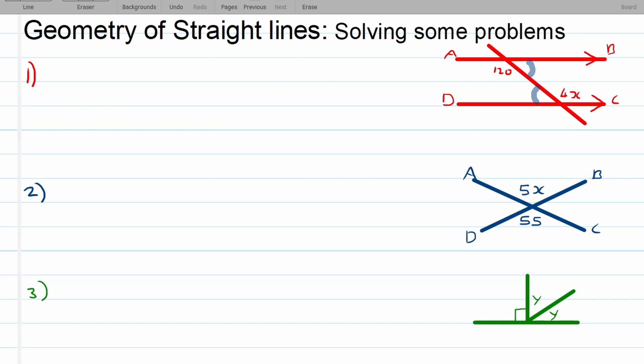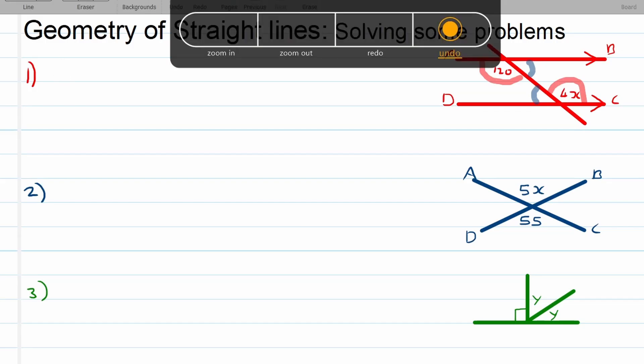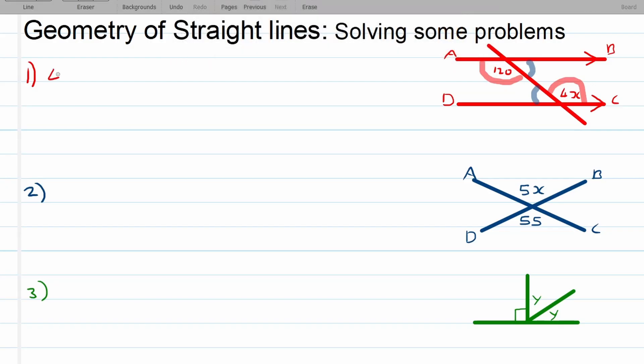But keep in mind, the other two, the 120 and the 4x are also alternating angles because of the parallel lines. So that's what we are going to use. We will be able to make a statement by saying 4x is equal to 120.